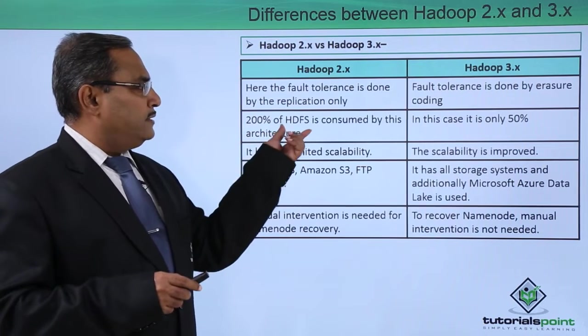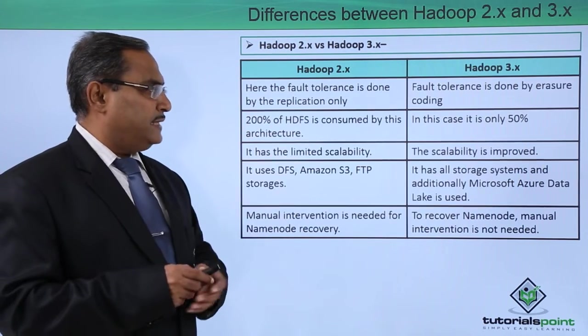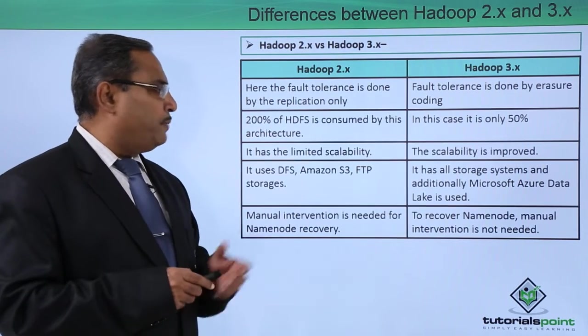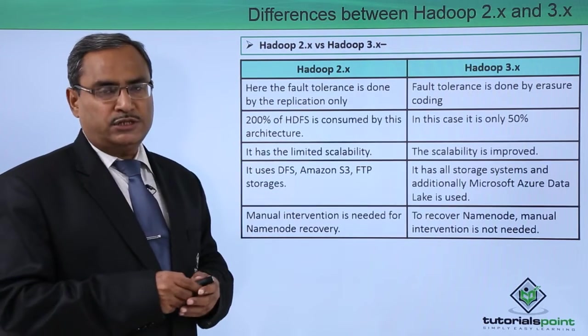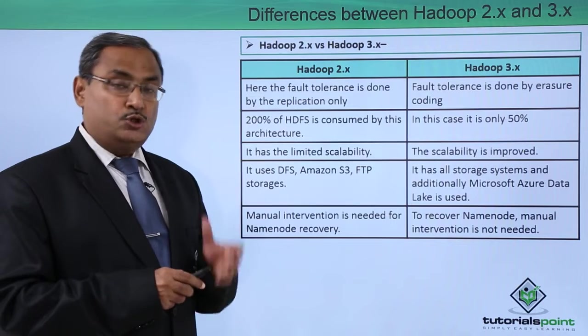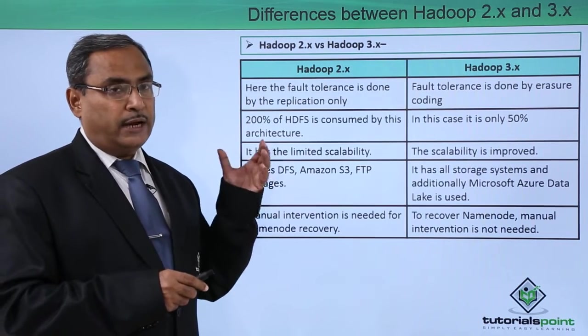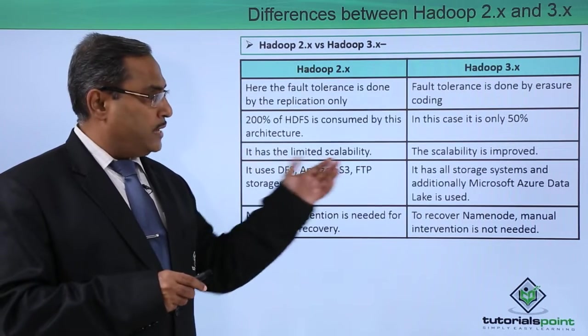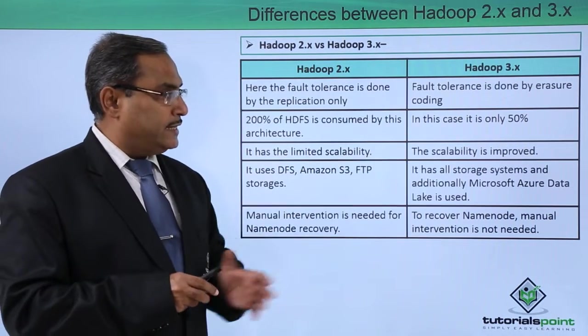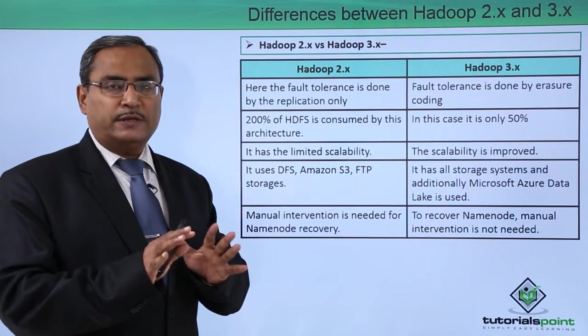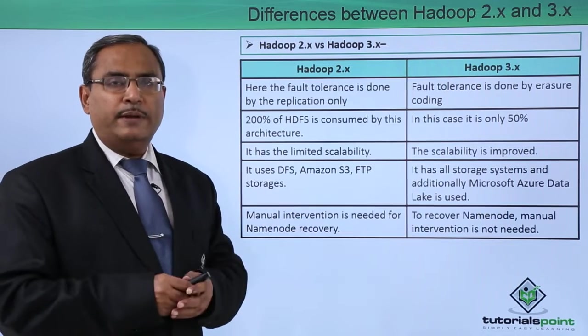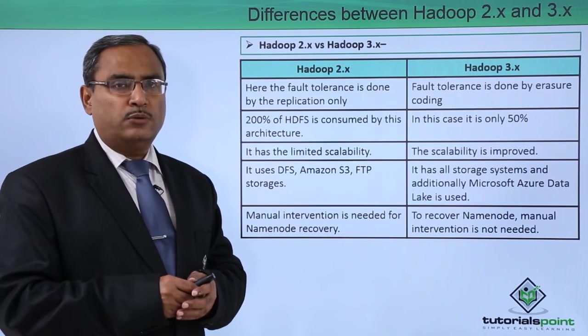In Hadoop 2.x, 200% of HDFS is consumed by the architecture storage. But in Hadoop 3.x, only 50% is consumed, so we have more space to work with.